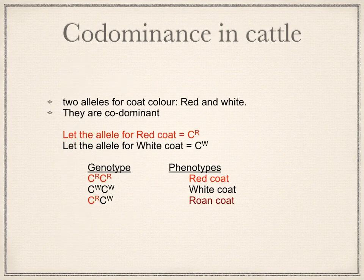Codominance also occurs in cattle. There are two alleles for coat colour — red and white — and they are codominant. We write C superscript R for red and C superscript W for white. If homozygous R, R, you get a red coat; if homozygous W, W, you get a white coat. If codominant — genotype R, W — you get a Roan coat, so the phenotype is different from either homozygous parent.